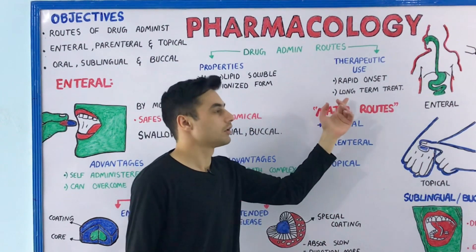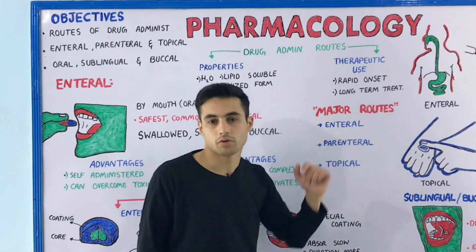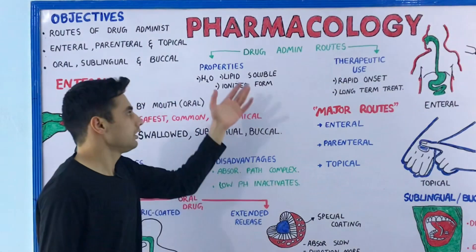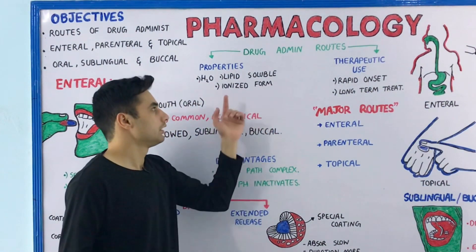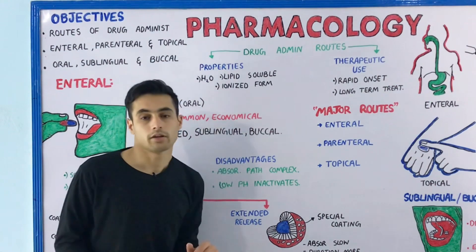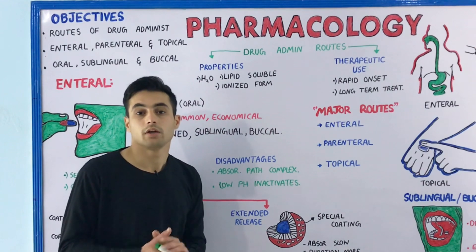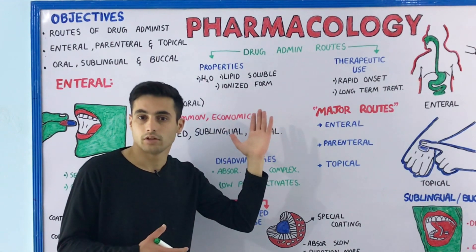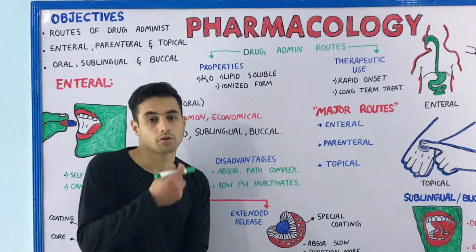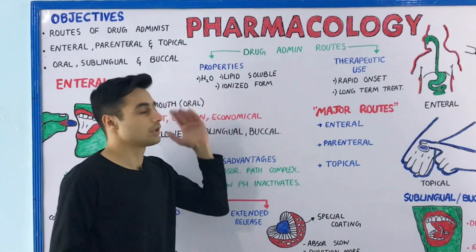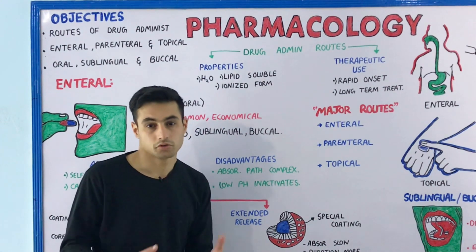Sometimes we need medications for rapid onset of action, or we need rapid relief of pain. Other times we use medications for long-term treatment. These properties — such as water solubility, lipid solubility, and ionized form — affect the pathway. If the medication is in liquid form, we can inject it intravenously or take it orally. If it is in gaseous form, we inhale it through nasal or oral inhalations.